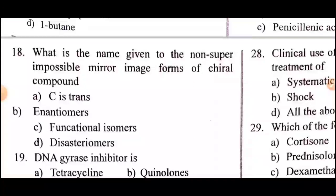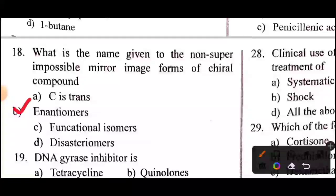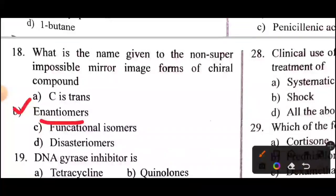Question: what is the name given to the non-superimposable mirror image forms of chiral compounds? Answer: option B, enantiomers.